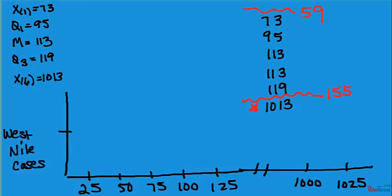Remember, we're reporting West Nile cases. Since there were no numbers smaller than the lower fence, X1, the smallest ordered observation, 73, will be used.